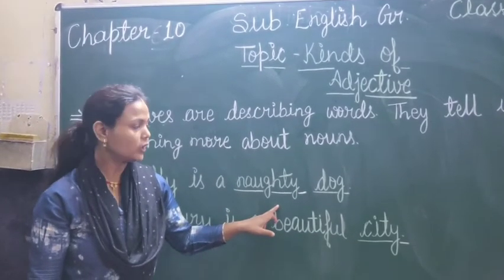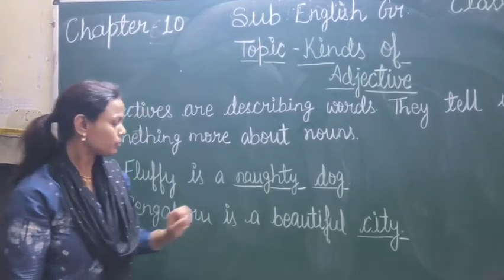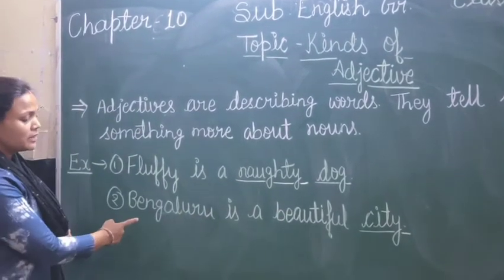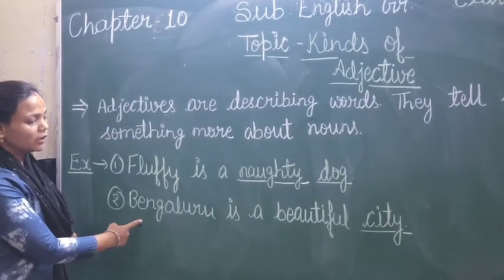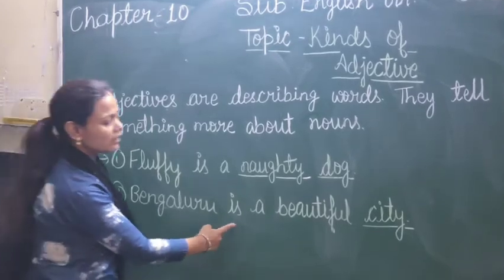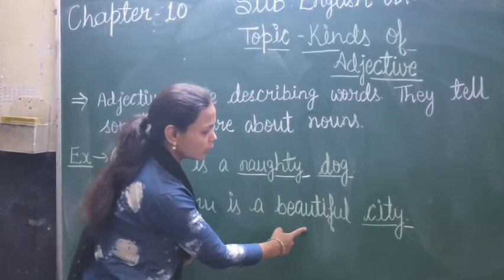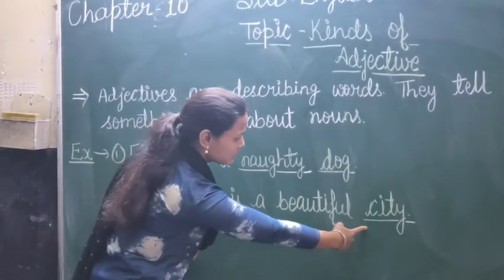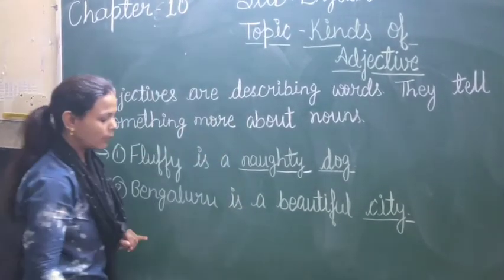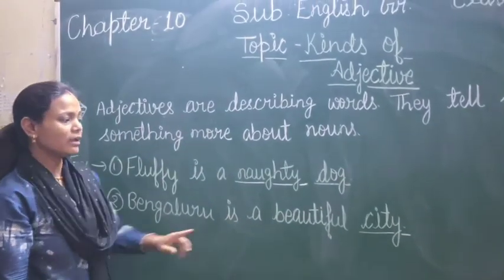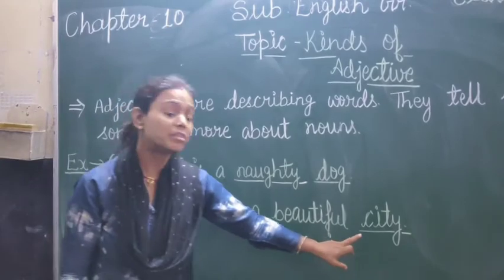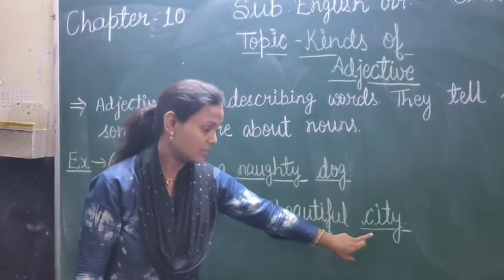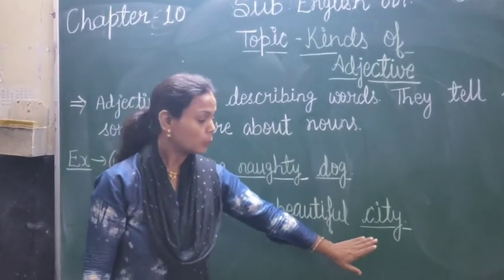Dog kaisa hai? Naughty hai. Next example: 'Bengaluru is a beautiful city.' Bengaluru mein city kya hai? City hai — city is a noun.